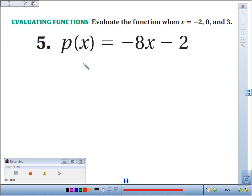Number 5, p of x equals negative 8x minus 2. We're going to evaluate that function when x is negative 2, 0, and 3.